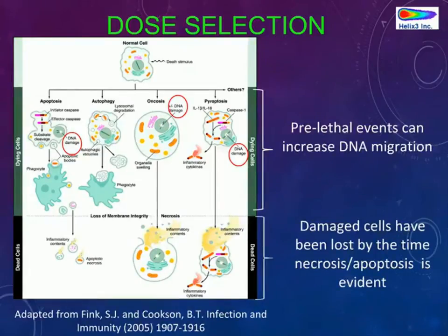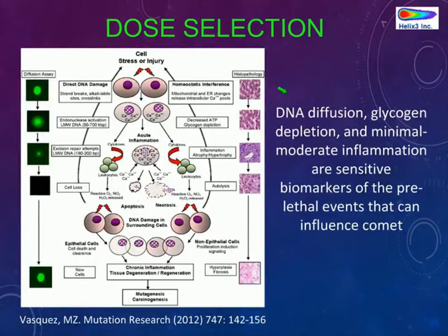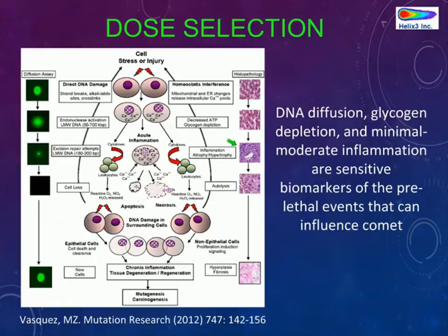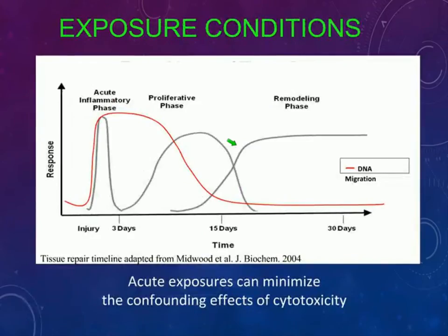As shown in this diagram, the DNA damage most likely to impact the comet assay occurs before necrosis and apoptosis are evident — before cell membrane integrity is lost. So it is important when selecting your doses that your toxicity tests or dose range finder includes evaluation of these prelethal events of cell death. The biomarkers for those prelethal events can be measured both by diffusion assay — looking at levels of diffusion in comet assay slides that have not undergone electrophoresis — and in histopathology. Rather than looking for apoptosis, you can look for decreased ATP, glycogen depletion, and very low levels of inflammation, which are more likely to impact DNA migration in the comet assay.